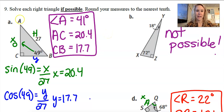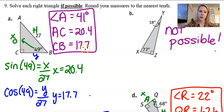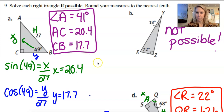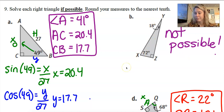For part A, angle A = 180 − 90 − 49 = 41 degrees. Then I used trig to find sides since I couldn't do Pythagorean theorem with only one known side: using angle 49, opposite over hypotenuse gives AC = 20.4. For the base, cosine 49 = y/27 gives BC = 17.7. Part B is not possible to solve because no side length was given — if they don't give you a side you cannot solve for any sides.